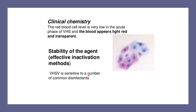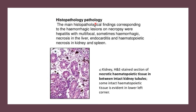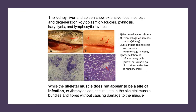The virus is sensitive to a number of common disinfectants. Main histological findings include hemorrhagic lesions on necropsy, hepatitis with multifocal hemorrhagic necrosis in the liver, endocarditis, and hematopoietic necrosis in the kidney and spleen. Histopathology of the kidney in H&E stain shows necrotic hematopoietic tissue between the kidney tubules. Additional lesions include hemorrhage on the viscera, somatic muscle of the kidney, loss of hemopoietic cells, and accumulation of inflammatory cells in the liver.